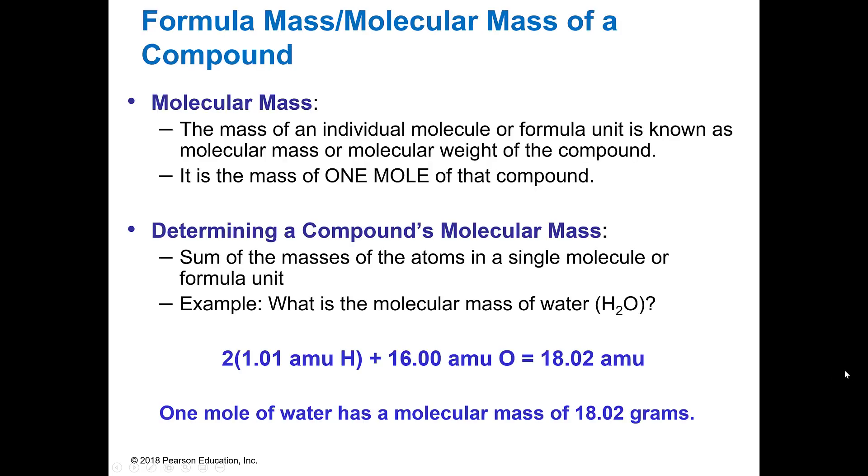So molecular mass is basically the mass of the formula unit, or the individual molecule. It is the mass of one mole of the compound. We know that the atomic mass, that number with the decimal places that you see on the periodic table, is the atomic mass. What we do to get the molecular mass or molar mass is we take the sum of all of the atoms and add them all together and then we come up with the total.